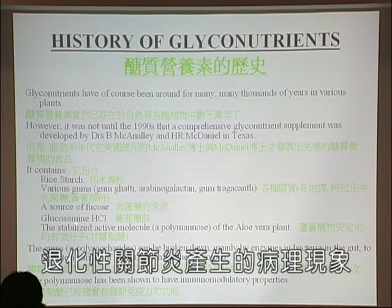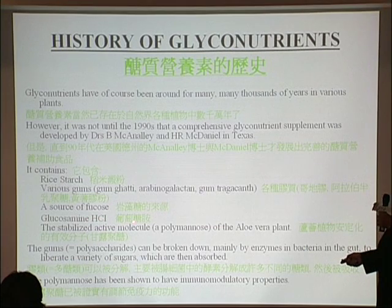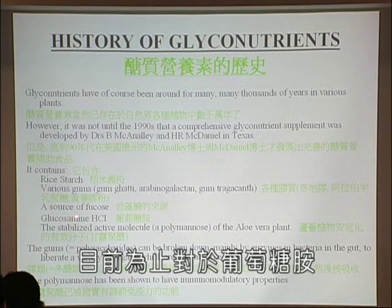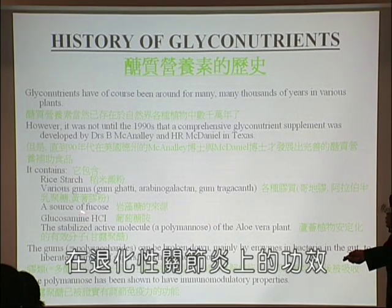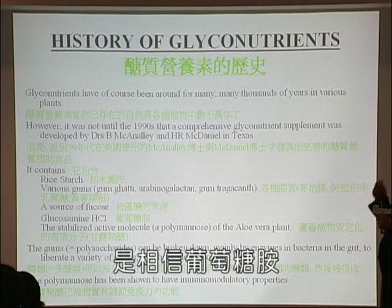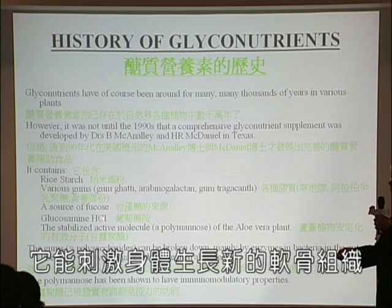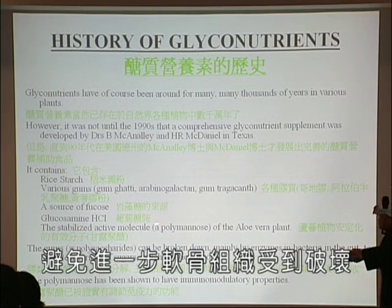Glucosamine hydrochloride has been widely used throughout the world to help in the treatment of osteoarthritis. Osteoarthritis is basically degeneration of cartilage in our joints, and it's believed that glucosamine helps this condition by stimulating the formation of new cartilage or preventing further breakdown of cartilage in joints.